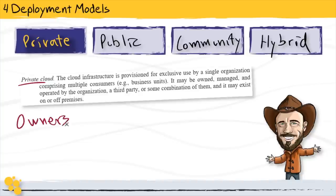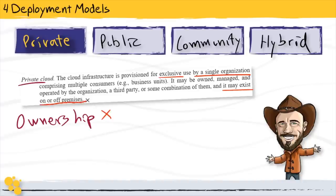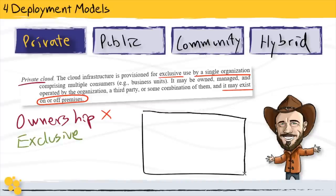When people think about private, often the concept that comes to mind is that you own that thing and it must run within your own data center. We want to be careful about that, because if we look at the definition, it's about exclusive use by a single organization. The definition does not say you have to own the resources, and it goes on to say that it may exist on or off premises — it doesn't have to run in your own data center on your own enterprise networks.